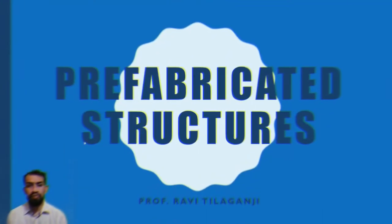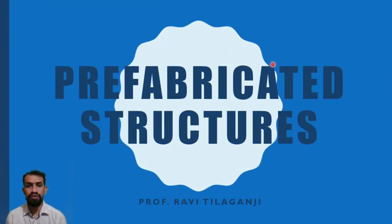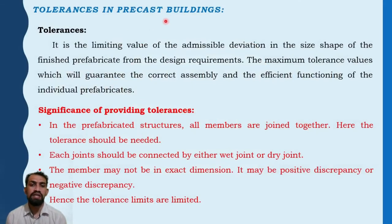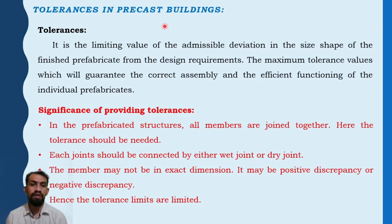Welcome to prefabricated structures. In this video, we will be looking at tolerances in precast buildings. Tolerance is the limiting value of the admissible deviation in the size and shape of the finished prefabricate from the design requirements — the maximum tolerance values which will guarantee the correct assembly and efficient functioning of the individual fabricates.